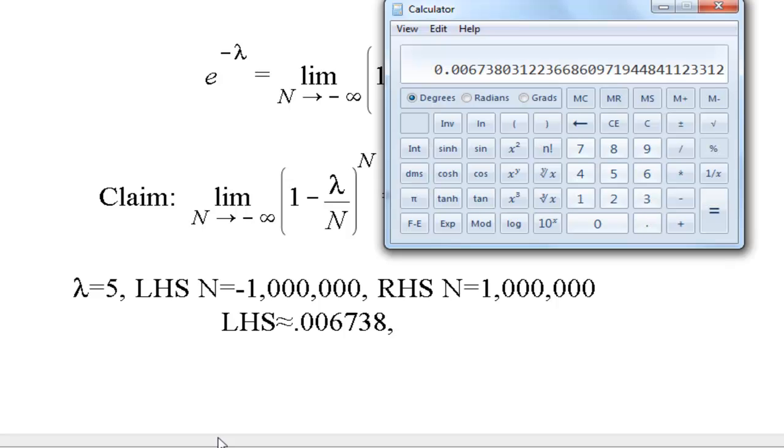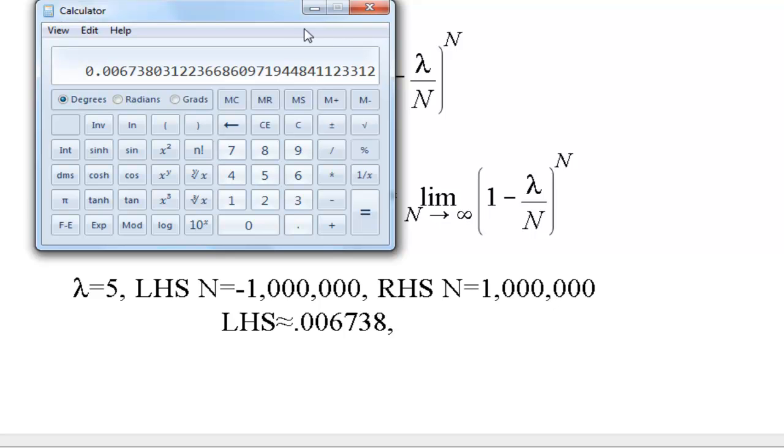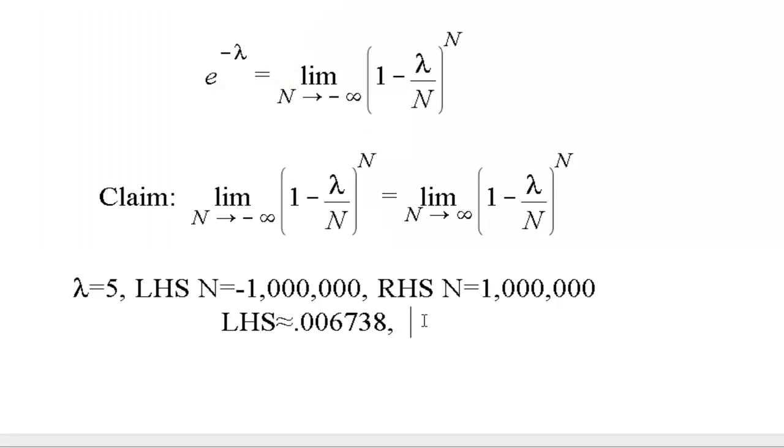And let's see what happens on the right-hand side. Okay, here I'm going to plug in lambda equals 5 and N equals positive a million. So that will give me 1 minus 5 divided by a million, raised to the power of a million. Okay, and we see that indeed these do round the same, what is that, that's the nearest millionth actually. And the right-hand side is approximately 0.006738.